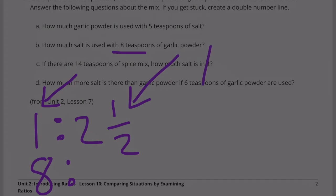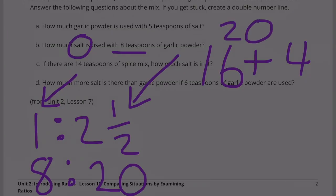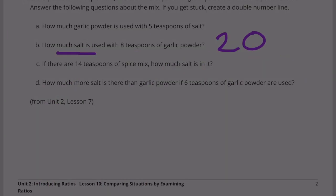2 times 8 is 16. Half of 8 is 4. 16 plus 4 is 20. So there would be 20 teaspoons. 20 teaspoons of salt to every 8 teaspoons of garlic powder.